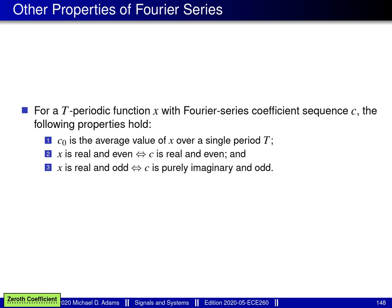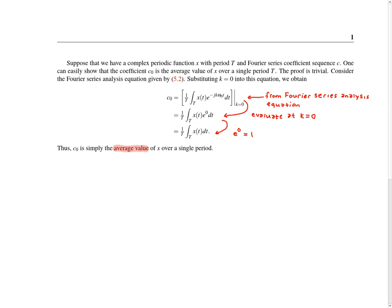We'll now prove the first property — that C_0 is the average value of X over a single period. We simply use the Fourier series analysis equation and evaluate it at K equal to 0. When we do this, the exponential becomes e to the 0, which equals 1, and drops out. This gives us an expression that is exactly the definition of the average value of a periodic function over a single period, confirming that C_0 is indeed the average value of X.